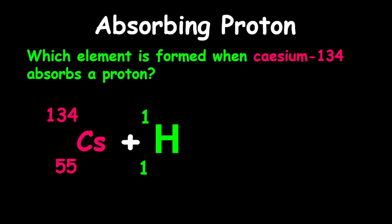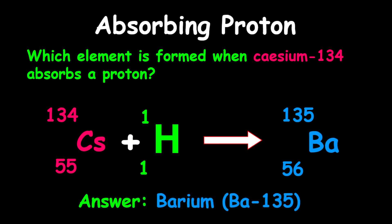Absorbing a proton, what we will get here, adding the masses, is 135. And in the proton numbers, what we get here is 56. Checking this out on the periodic table, you will realize that this element is barium. So therefore the answer is barium-135.